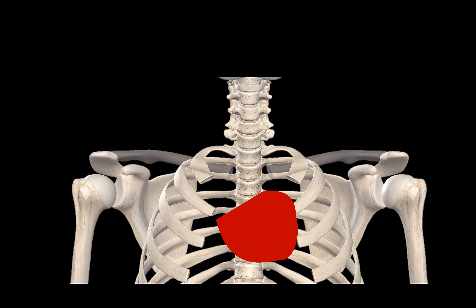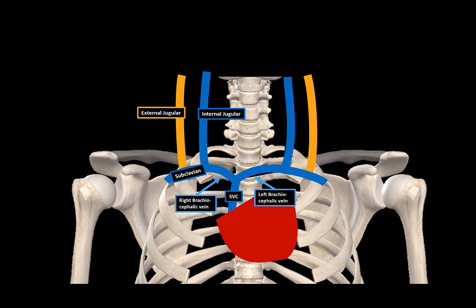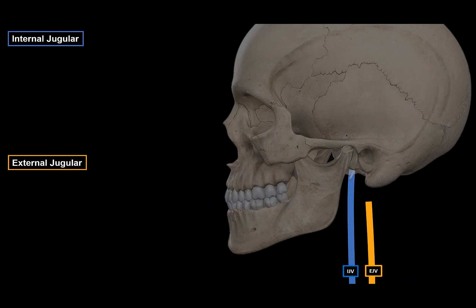Starting from the heart, we have the superior vena cava, which divides into the right brachiocephalic vein and the left brachiocephalic vein. The brachiocephalic veins are formed by the internal jugular vein and the subclavian vein. As the subclavian vein passes below the clavicle, it gives off the external jugular vein — shown here in yellow to separate these two veins. The subclavian vein then continues as the axillary vein. Now let's look at the neck and head from this perspective to better visualize the external and internal jugular veins.